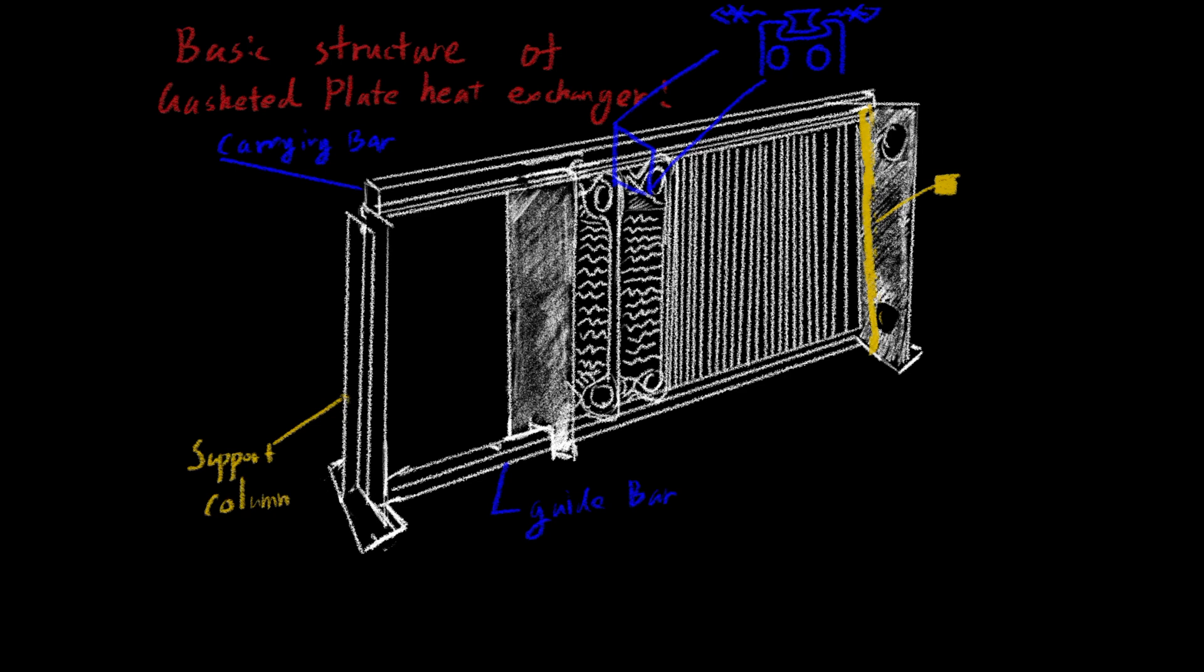Then we have the movable cover attached right after the last plates from the right. The movable cover is used to press the plates together to ensure the gaskets on the plates are sealed with one another, preventing any leak. That will be explained with more detail in later videos.